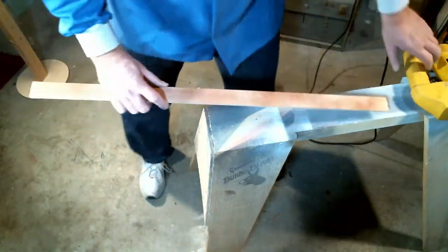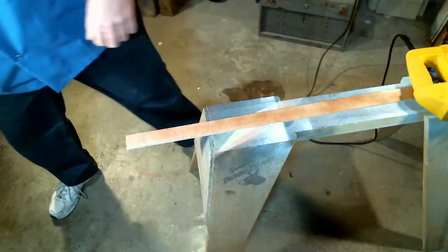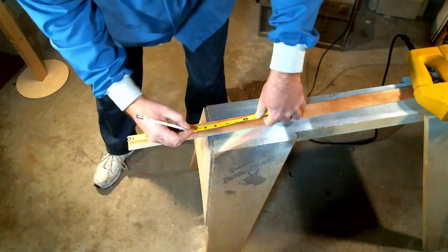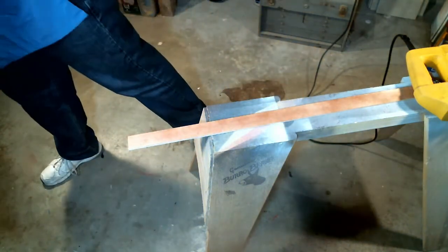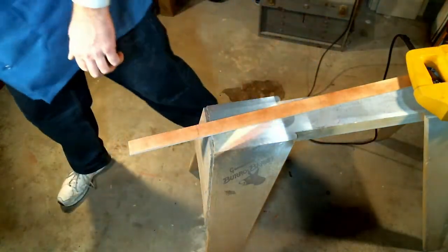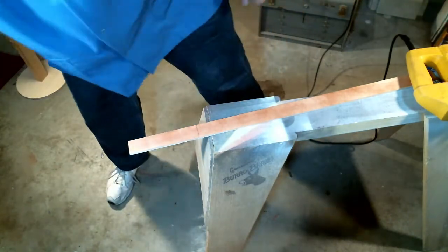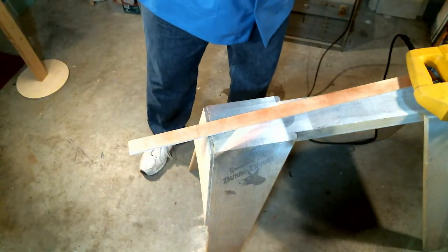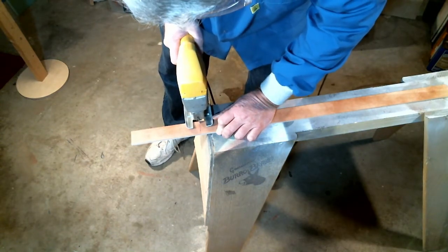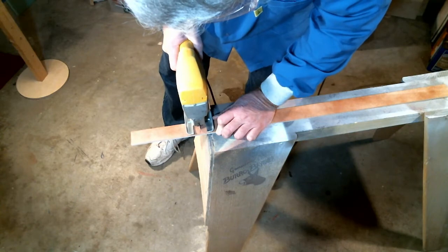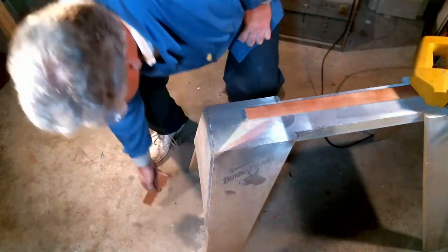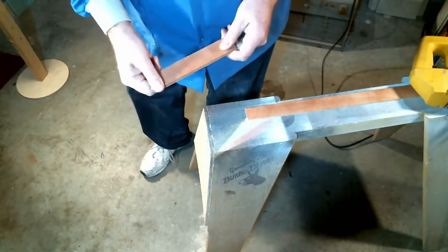Now I want to make the side rails. We'll mark them the same way. 7 inches long. Take my square and make a nice square line across. Put on my safety glasses. Using the jigsaw again, go ahead and cut off the rail. Let's do it a second time to get the second rail.